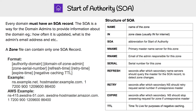It can contain a bunch of information, and you can see it all on the right-hand side here. You don't necessarily have to provide all the information, but those are all the options. It comes in the format of one big long string. You can see the format here, along with an example and an AWS example.